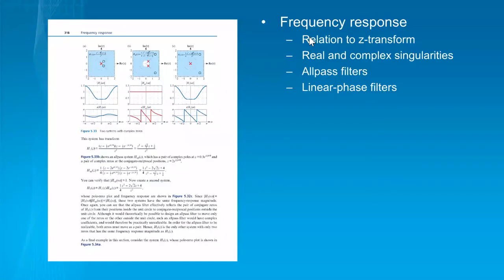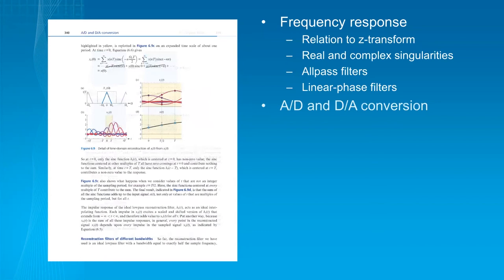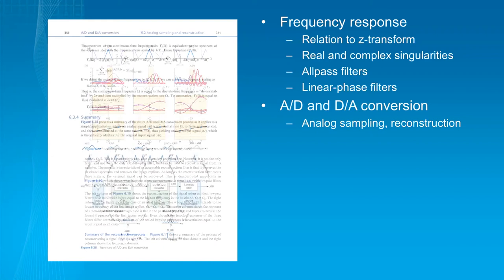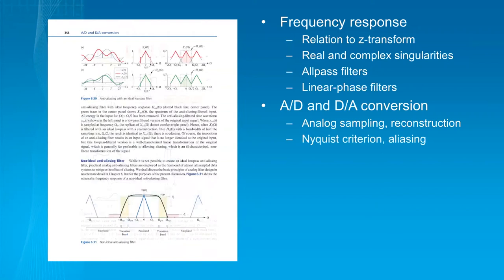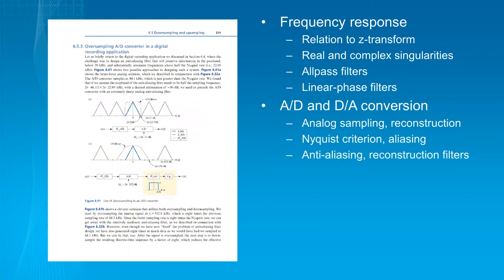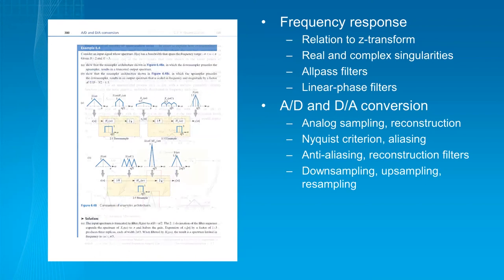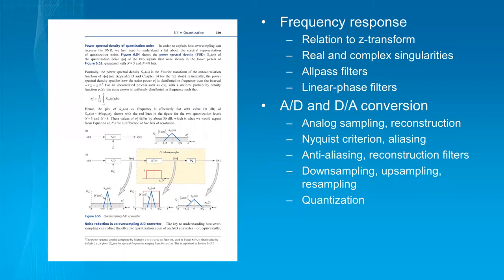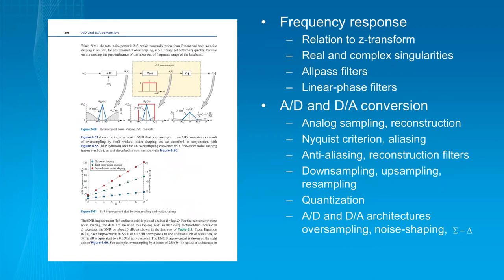Returning to the chapters. Next chapter is a big one: Analog to digital and digital to analog converters. And here I felt it was important to start first with analog sampling and reconstruction. So I cover this in a number of different ways. We talk, of course, about Nyquist criteria, aliasing, anti-aliasing and reconstruction filters. There are a bunch of applications having to do with how would you do this in the context of a CD, for example. Downsampling, upsampling, resampling. Quantization is discussed in pretty big detail. And then I have a long discussion about A to D and D to A architectures, such as oversampling and noise shaping, A to D converters and Sigma Delta converters.